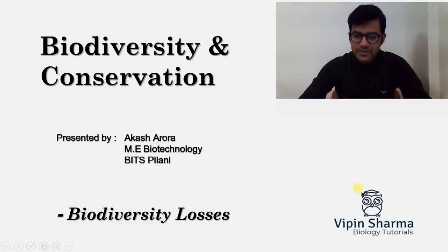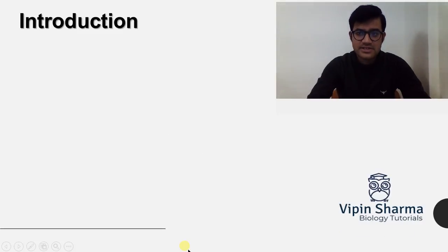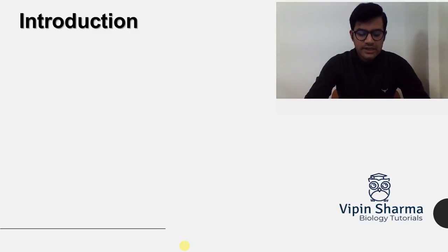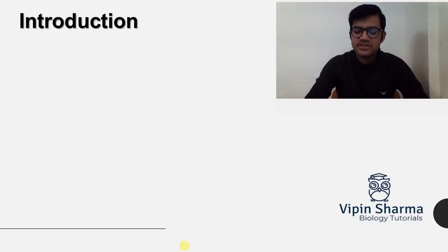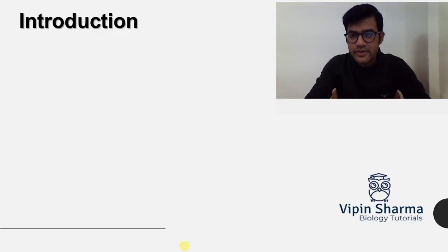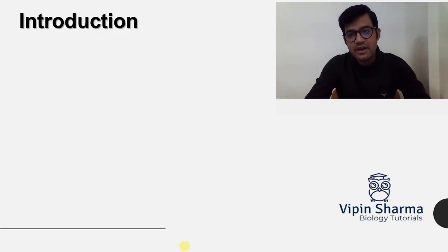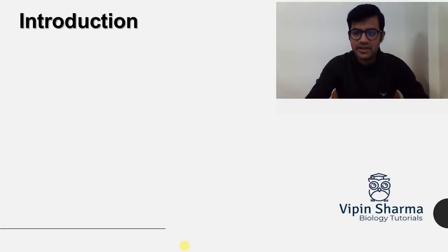Hey guys, this is Akash here for Vipin Sharma Biology Tutorials. Today I'm going to talk about biodiversity losses. We all know about biodiversity and why it's important. Due to increased population, urbanization, and industrialization, we are tending to lose our biodiversity. If we lose our biodiversity, the important functions it played as part of an ecosystem — oxygen production, material production, and stability of an ecosystem — will all be hampered.